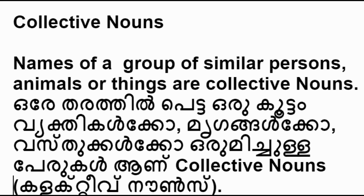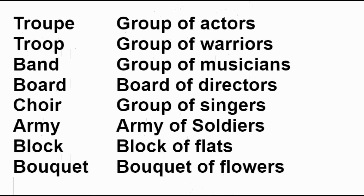Collective nouns are names of a group of similar persons, animals, or things. Examples: cast — group of actors; army — group of soldiers or warriors; band — group of musicians; board — board of directors; choir — group of singers; block — block of flats.